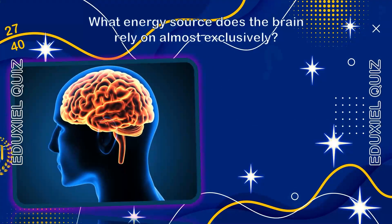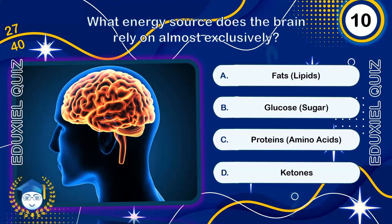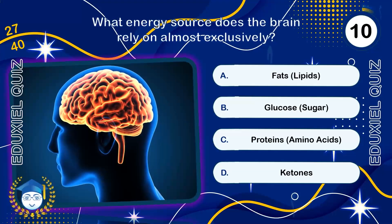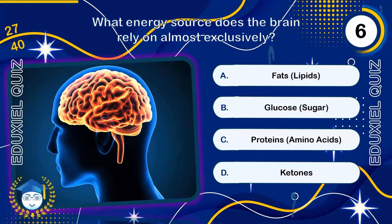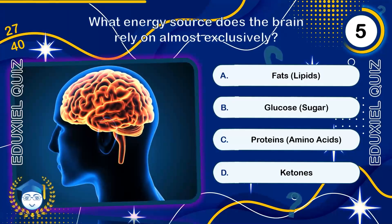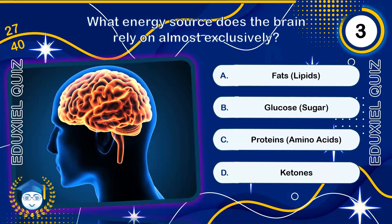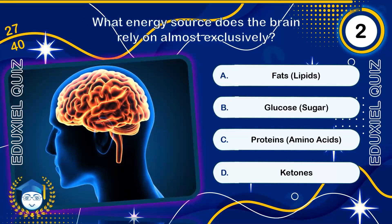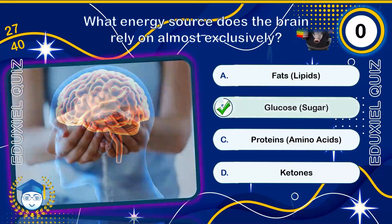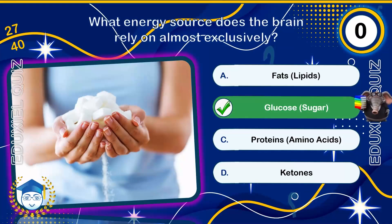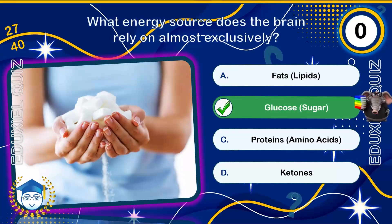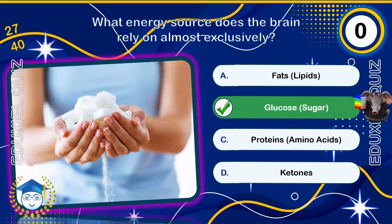What energy source does the brain rely on almost exclusively? Glucose. The brain consumes about 20% of the body's total glucose and cannot store it like muscles can, making a constant supply essential.